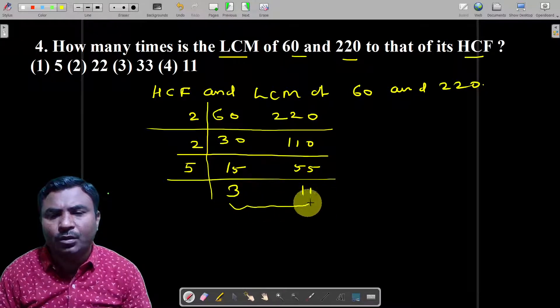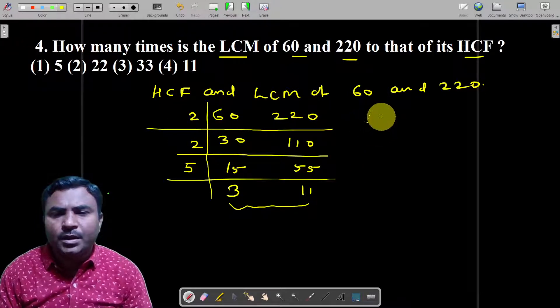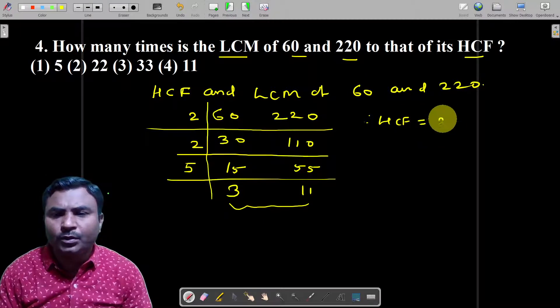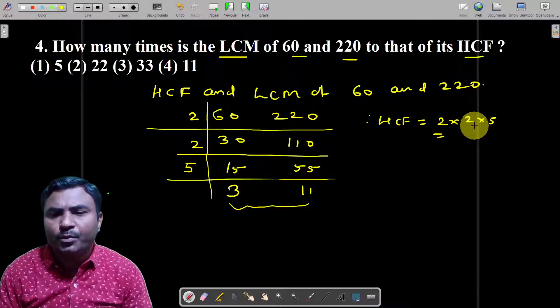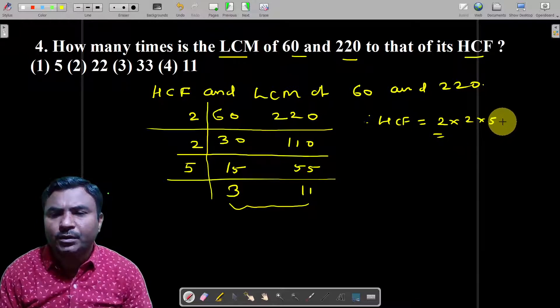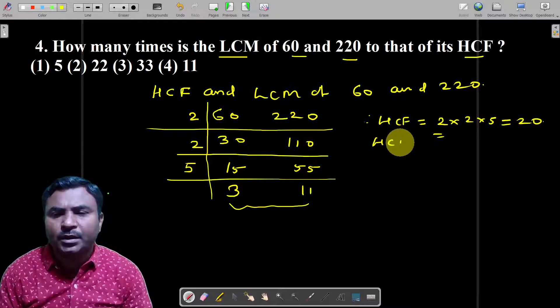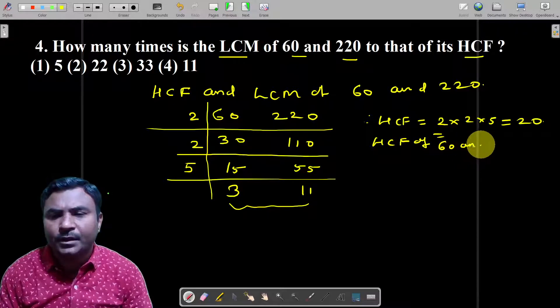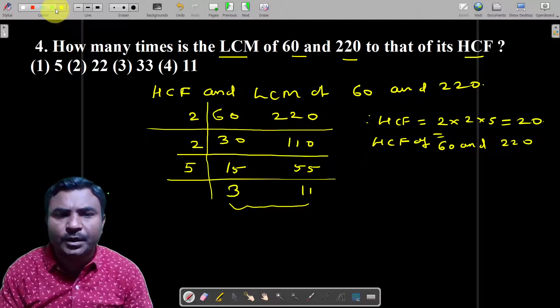You can determine the non-common factors. Therefore, HCF means the common factors 2 into 2 into 5, which means 2 times 2 is 4 and 4 times 5 is 20. So HCF of 60 and 220 equals 20.